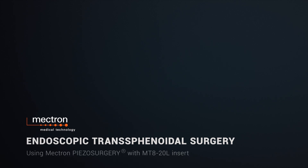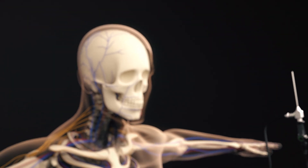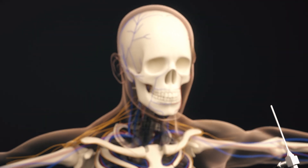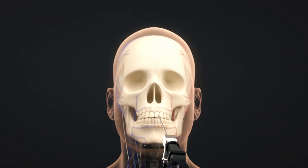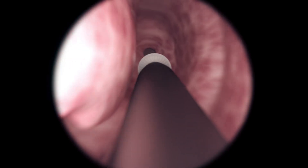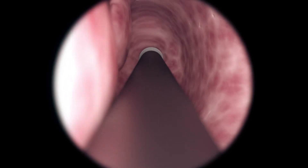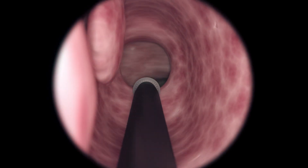The endoscopic transnasal transsphenoidal approach provides a unique access to the skull base, looking into the patient's right nasal cavity. With a zero-degree endoscope, the natural ostium of the sphenoid sinus is identified and expanded with a circular punch.